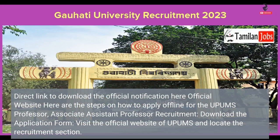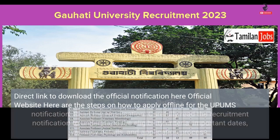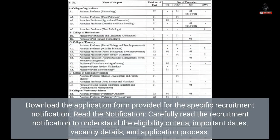A direct link to download the official notification is provided here. Here are the steps on how to apply offline for the UPAMS professor, associate, and assistant professor recruitment. First, download the application form by visiting the official website of UPAMS and locating the recruitment section. Download the application form provided for the specific recruitment notification.